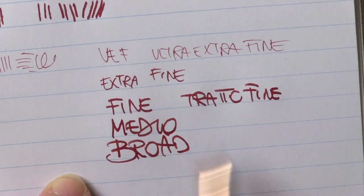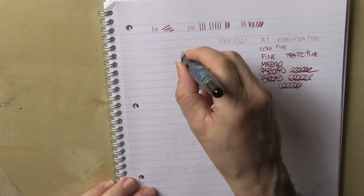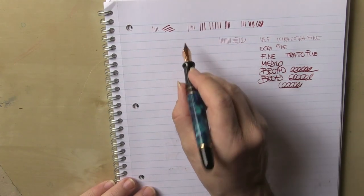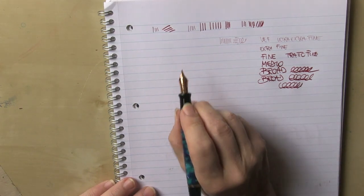I define this nib as a chameleon, because it can change writing. I will show you how by varying the inclination. The line goes from thin to medium, and vice versa.